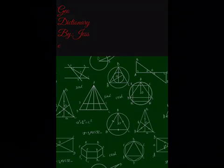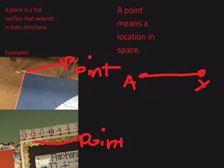Geodictionary by Jesse. A plane is a flat surface that extends in both directions. A point means a location in space.